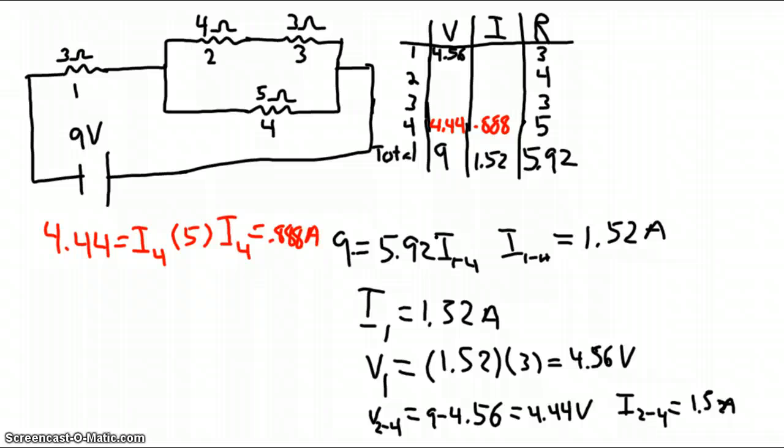The current for resistors 2 and 3 is the same since they are in series, so I can use the combined voltage and resistance to find the current in both.